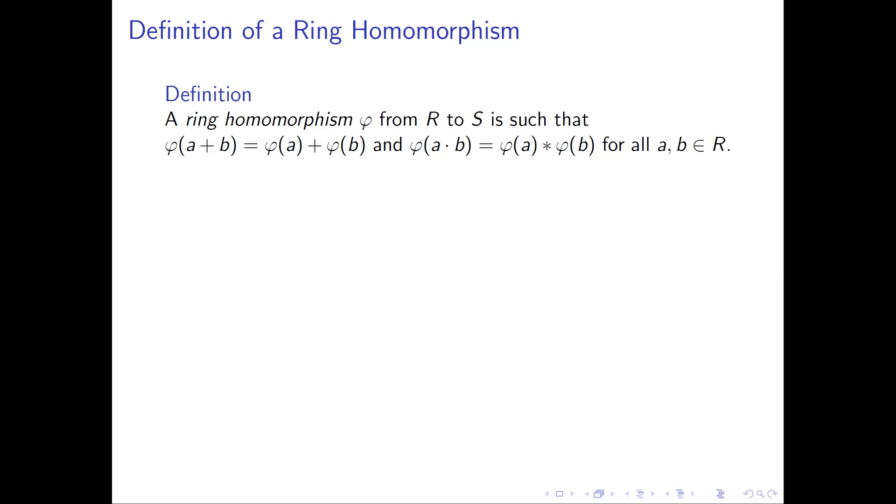To get started, let's deal with the definition of a ring homomorphism. A ring homomorphism phi from a ring R to a ring S is one that whenever we pick any two arbitrary elements A and B in the first ring R, phi of A plus B equals phi of A plus phi of B, and phi of A times B equals phi of A times phi of B.